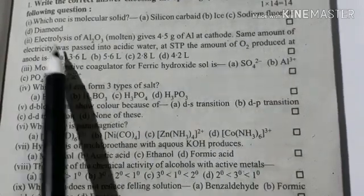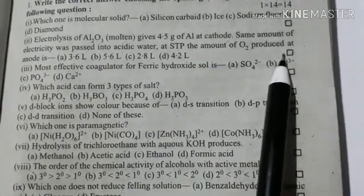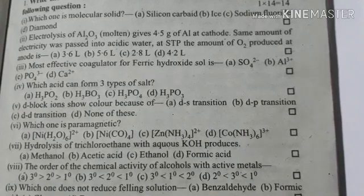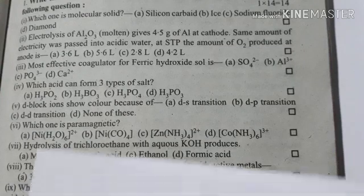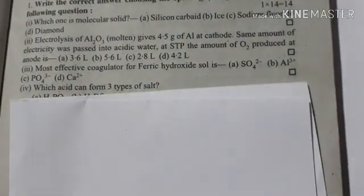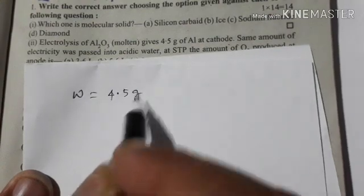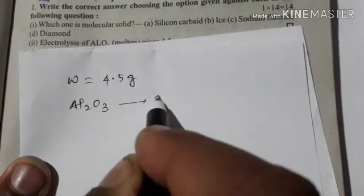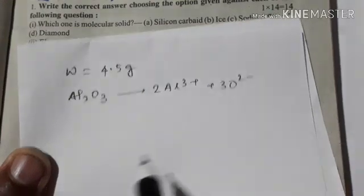The same amount of electricity was passed into acidic water at STP. The amount of oxygen produced at the anode — we can see the amount of oxygen that has been formed. We apply W = (Q × E) / F. Al2O3: L is compared, so Al2O3 is used in the calculation.